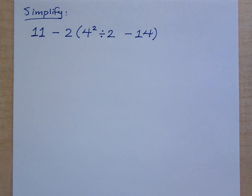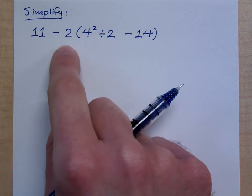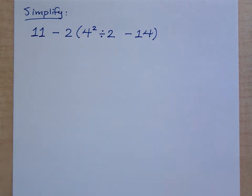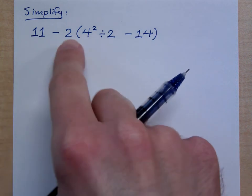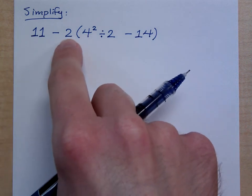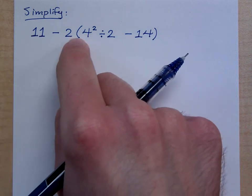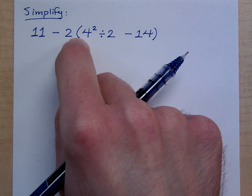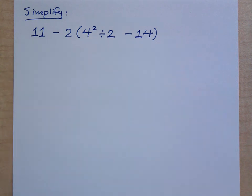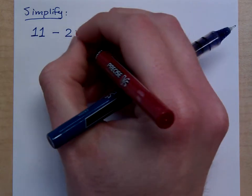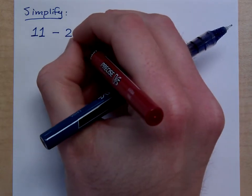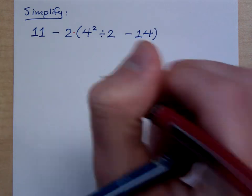Follow your order of operations. Order of operations says you do what first? Parentheses. So, can I do 11 minus 2? No. That's going to be one of the very last things you do. Notice how this 2 is right next to the parentheses. Since the 2 is right next to the parentheses, we know this is understood to be multiplication.